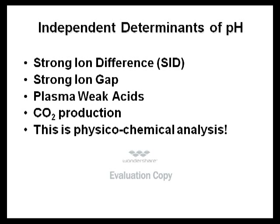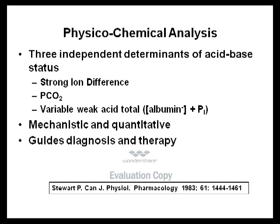There are three independent determinants of acid-base status according to physical chemical analysis: strong ion difference, pCO2, and variable weak acid total (Atot). Additionally, the strong ion gap is a co-determinant. Physical chemical analysis is mechanistic, quantitative, guides diagnosis and therapy. Dr. Stewart reintroduced this concept in 1983 in the Journal of Physiologic Pharmacology.